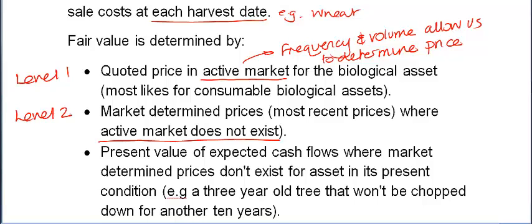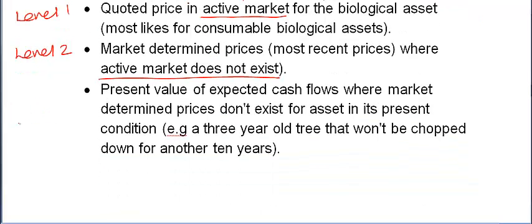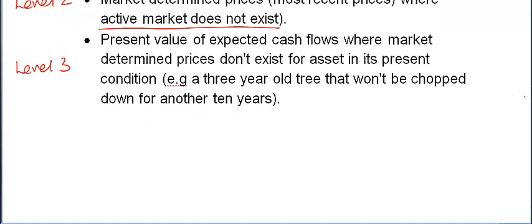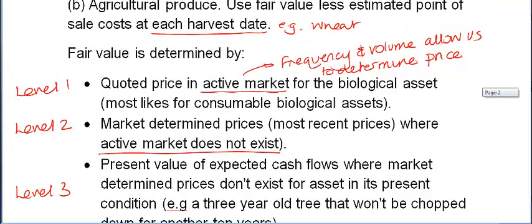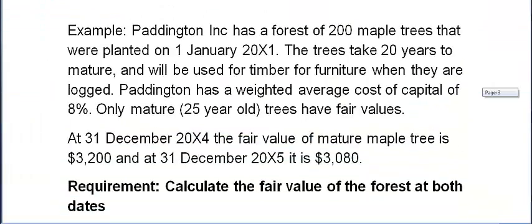Where an active market does not exist, you drop down to market prices — this is the equivalent of a Level 2 per IFRS 13. Then we have a Level 3, where we don't have a market for the asset in its present condition. For example, a three-year-old tree that won't be chopped down for another 10 years because the wood isn't mature, or cattle being grown for slaughter that aren't yet old enough for market. IAS 41 ties in quite well with IFRS 13.